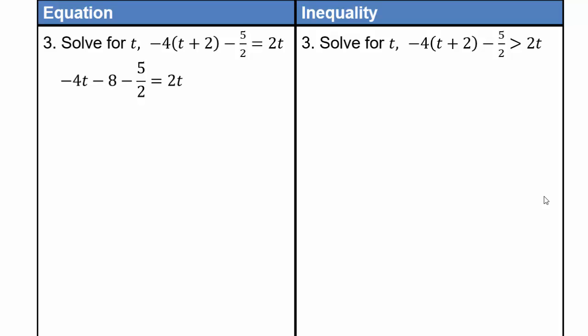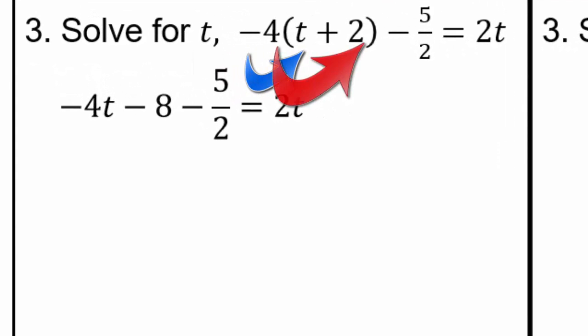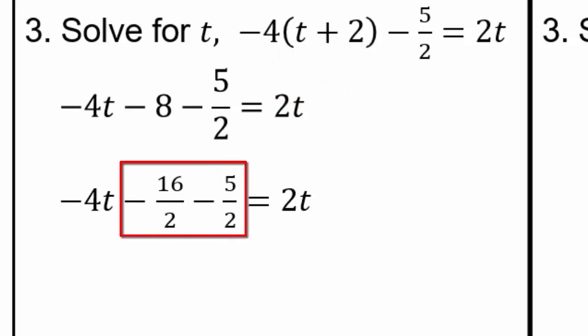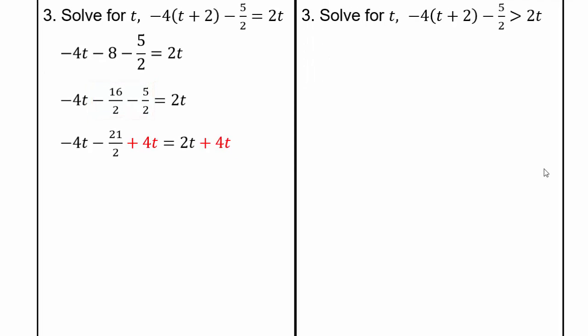Alright, let's start with the left-hand side. We have taken the negative 4 and distributed it — distributive property, multiplication over addition. Negative 4 times t is negative 4t. Negative 4 times positive 2 is negative 8. Then we have minus 5 halves and equals 2t. Here we have negative 16 halves minus 5 halves, so we combine those: negative 4t minus 21 halves. To get rid of the 4t, add 4t to both sides, giving negative 21 halves equals 6t.